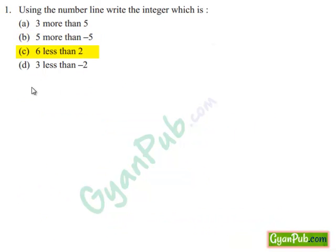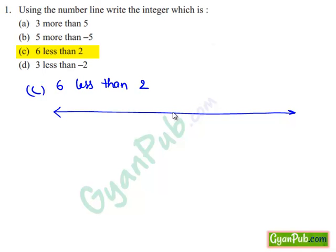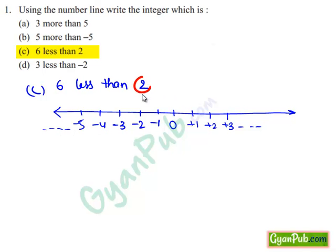Let's move on to part c: 6 less than 2. To know the integer which is 6 less than 2, we can draw a number line. Mark zero in the middle. Right side of zero are plus 1, plus 2 and plus 3. Left side of zero are minus 1, minus 2, minus 3, minus 4, minus 5 and so on. First, mark plus 2. For this, we move right side of zero by 2 steps: 1, 2. Mark plus 2 on this number line.